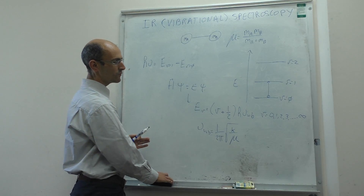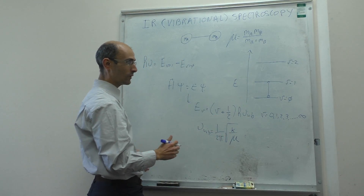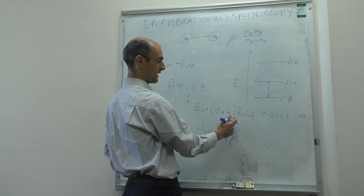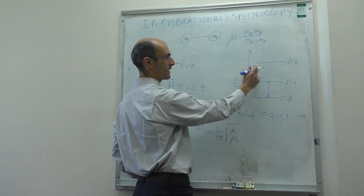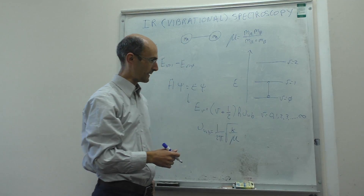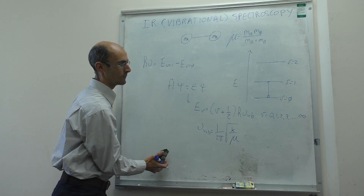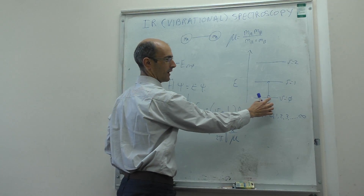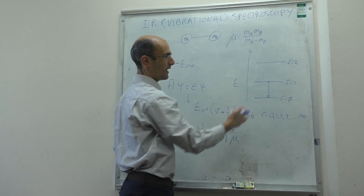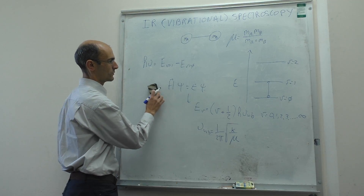In principle, we know what the energies of these levels are. According to this expression, they are actually equally spaced — the difference in energy between V0 and V1 is the same as between V1 and V2, V2 and V3, and so on. The question is what transitions you will actually observe: V0 to V1, V1 to V2, V2 to V3, or maybe V0 to V2. That's what the selection rules determine.